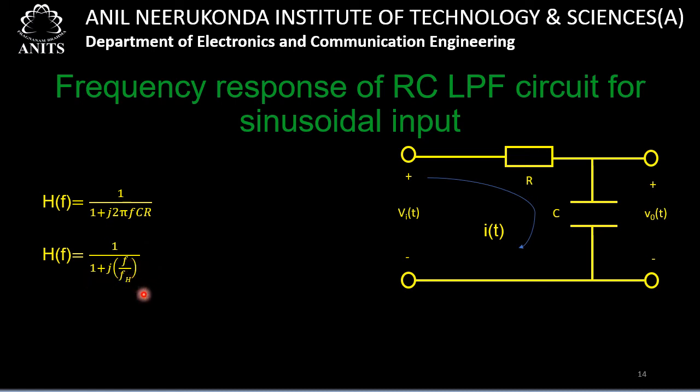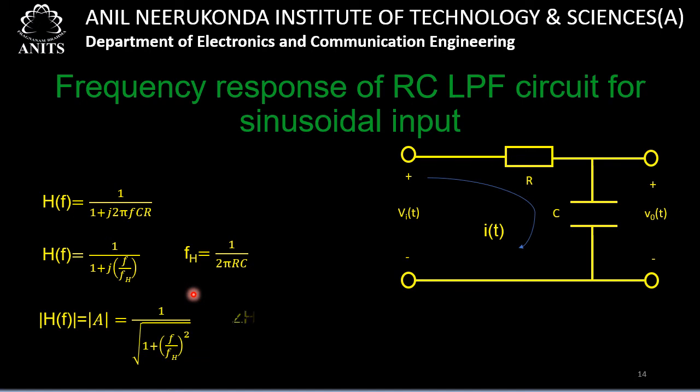This can be written as H(f) = 1/(1 + j·f/fH), where fH = 1/(2πRC) is the upper cutoff frequency. Below fH, frequencies are passed by the circuit; above fH, frequencies are rejected. This cutoff frequency fH depends on the circuit elements R and C.